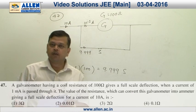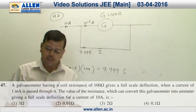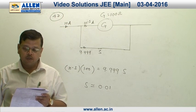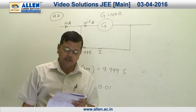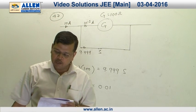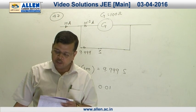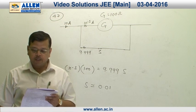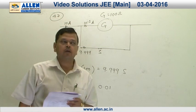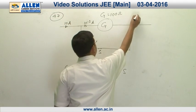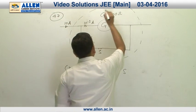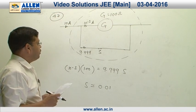Question number 47. In this question it is given that a galvanometer having a coil resistance of 100 ohm gives full scale deflection when a current of 1 milliampere is passed through it. We need to calculate the value of shunt which converts this galvanometer into an ammeter giving full scale deflection for a current of 10 ampere.